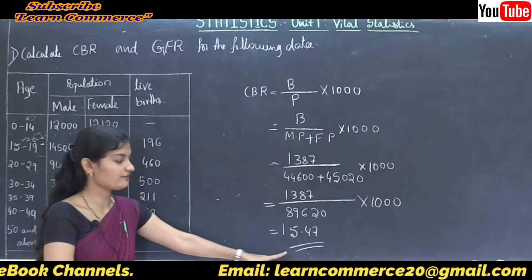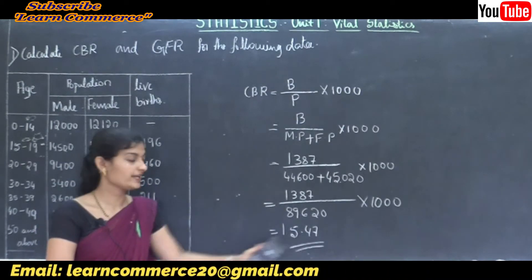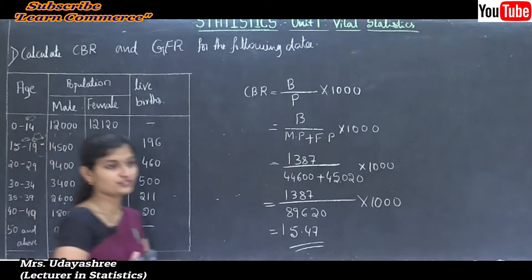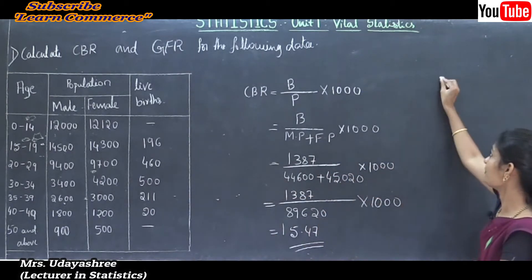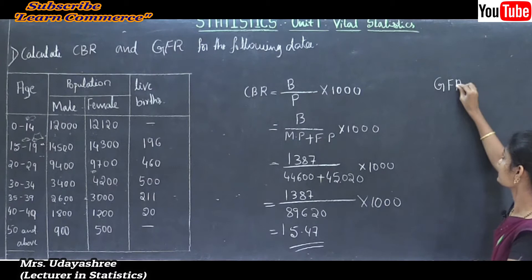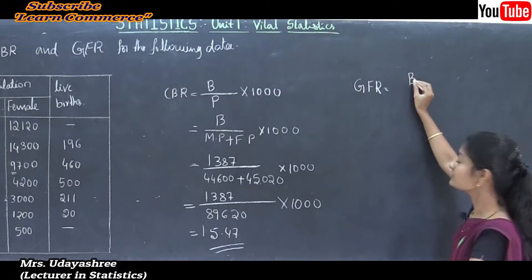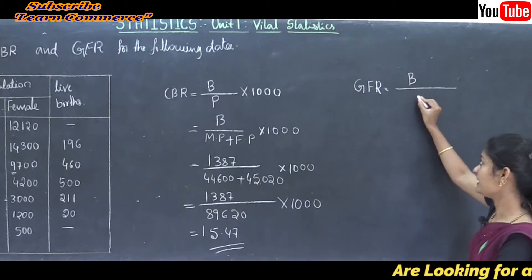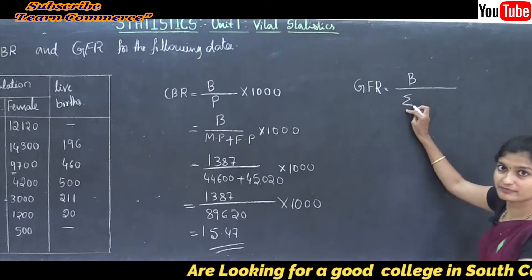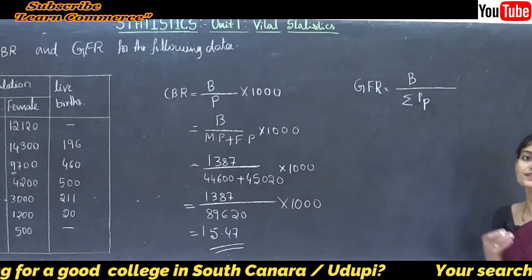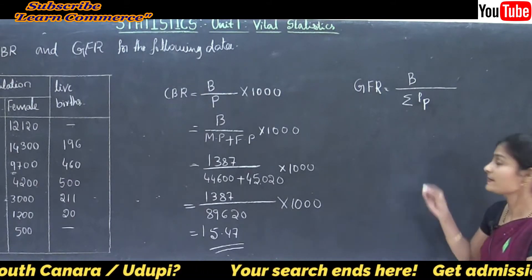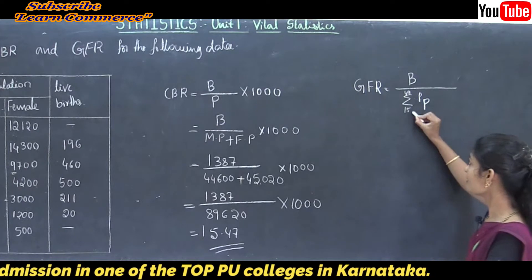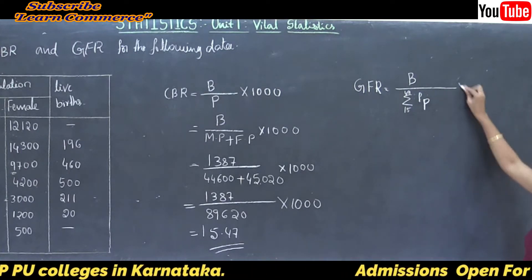This is equal to 1387 divided by 89,620 into 1000, that is 15.47. Here crude birth rate value is 15.47. Next we need to calculate general fertility rate. The formula of GFR is: GFR is equal to number of live births in the year divided by total number of females of childbearing age, into 1000. Here childbearing age of females is between 15 to 49 years.